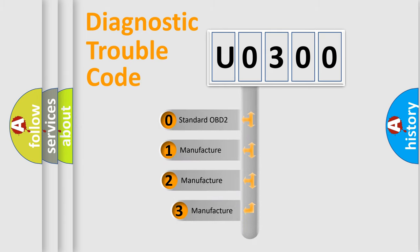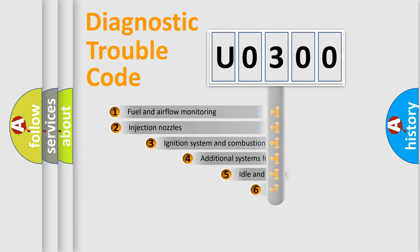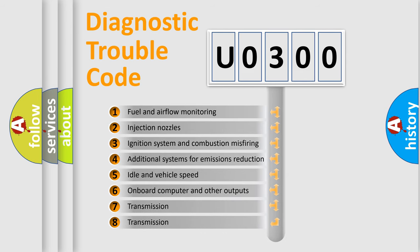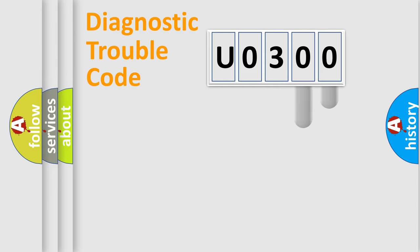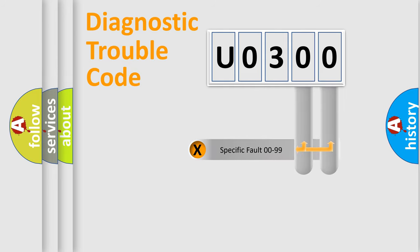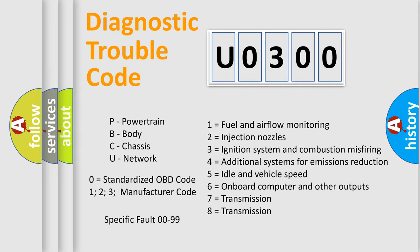If the second character is expressed as zero, it is a standardized error. In the case of numbers one, two, or three, it is a more specific expression of a car-specific error. The third character specifies a subset of errors. This distribution is valid only for the standardized DTC code. Only the last two characters define the specific fault of the group, and such a division is valid only if the second character is expressed by the number zero.